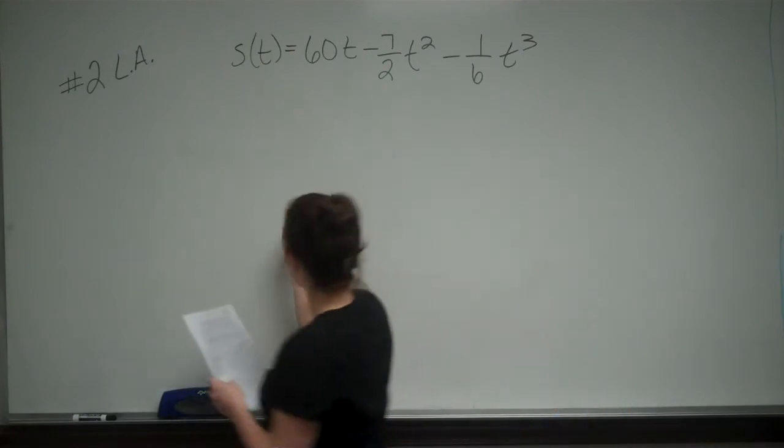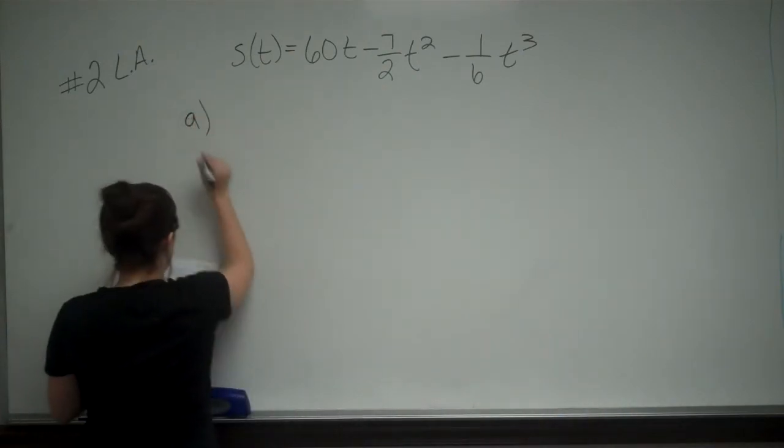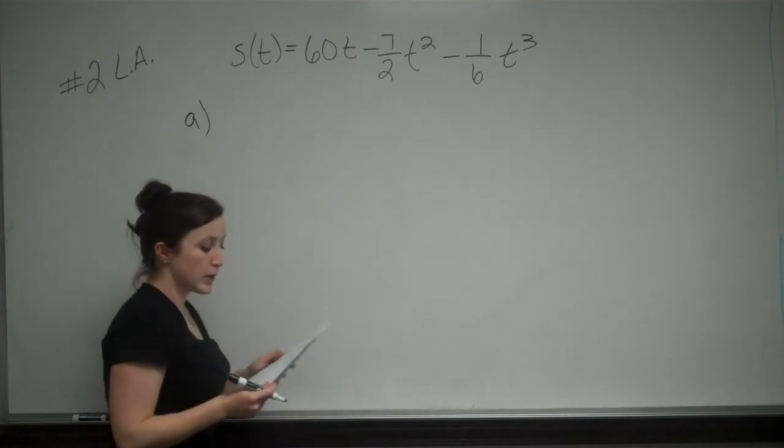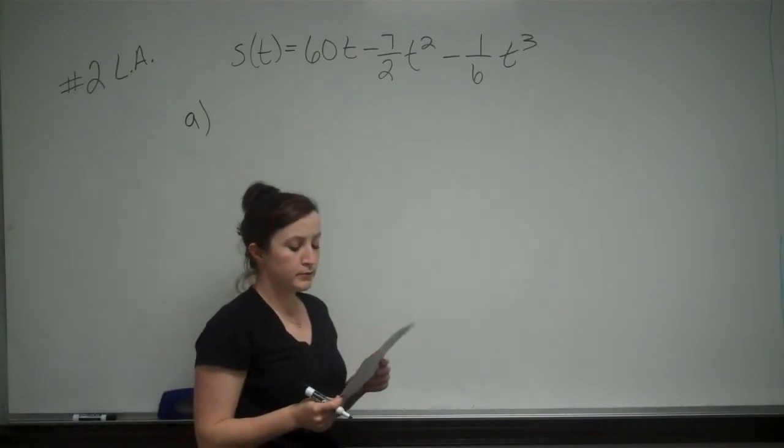Part A asks us to find the velocity of the car when the brakes were first applied. Be sure to include units in your answer.